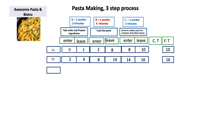Now let's talk about cycle time. Cycle time is defined as the time that passes between customer one getting his pasta and customer two getting his pasta. Customer one got his pasta at t=10 and customer two got his pasta at t=16. Therefore the time elapsed between these two events is six minutes — so this is the cycle time of this process. You can apply the same logic between customer two and customer three to find the cycle time.